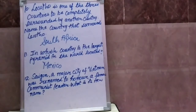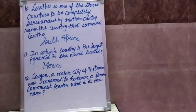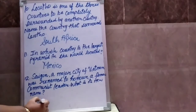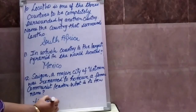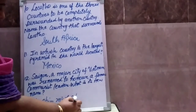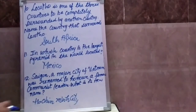Question number twelve: Saigon, a major city of Vietnam, was renamed to honor a famous communist leader. What is its new name? Vietnam ka ek pramukh shehar Saigon, ek prasiddh communist neta ka samman karne ke liye badal diya gaya tha. Iska naya naam kya hai? Your answer is Ho Chi Minh City.